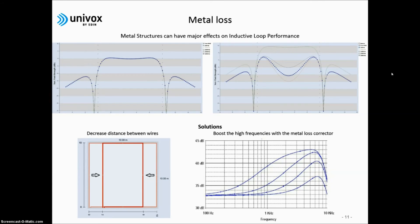The other way is to use a metal loss corrector, which is a type of tone control, which is built into the driver. This will in different ways boost the high frequencies. An MLC, a metal loss corrector, will help with your frequency response, but not with your field strength variation. So adjusting the loop design is 90% of the solution, and MLC is 10%.